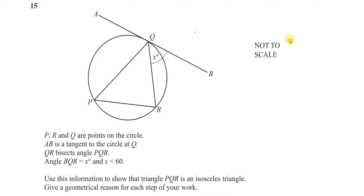So if we look at this diagram here, they've told us a few things. AB is a tangent to the circle, and QR bisects angle PQB. So this line QR is bisecting this angle PQB, which means it cuts this angle into two equal angles. So that means this must also be angle X, because these two angles must be the same.